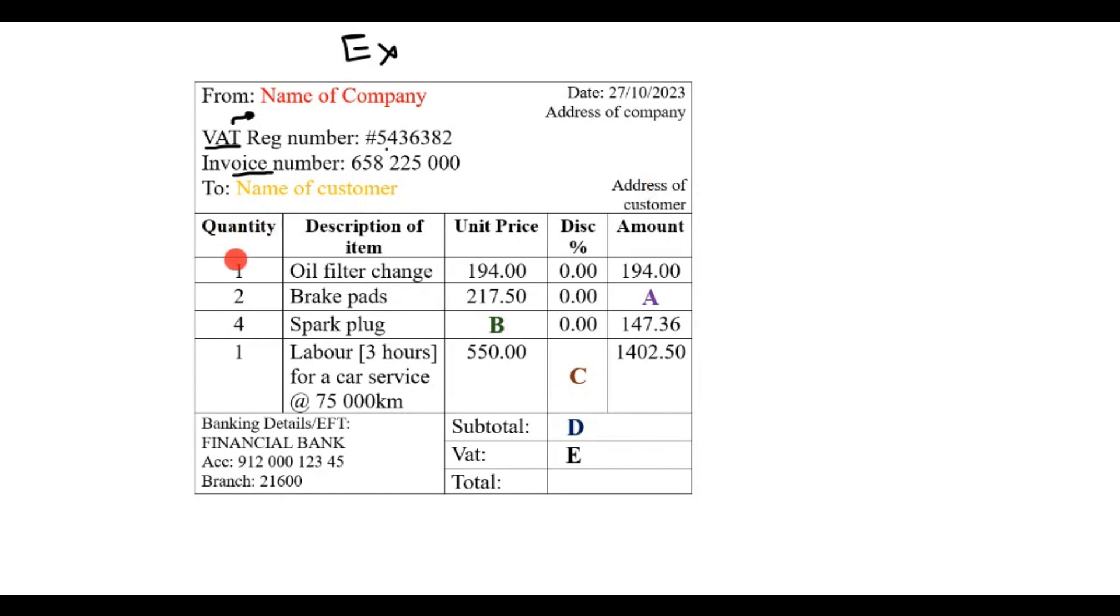Starting with the important part: the quantity shows how many of each item, a description of what exactly was done - so there was an oil filter change, two new brake pads, four spark plugs, and labor. Now labor is difficult to quantify, so that's why they say one but in brackets they say three hours. This was a car service at 75,000 km.